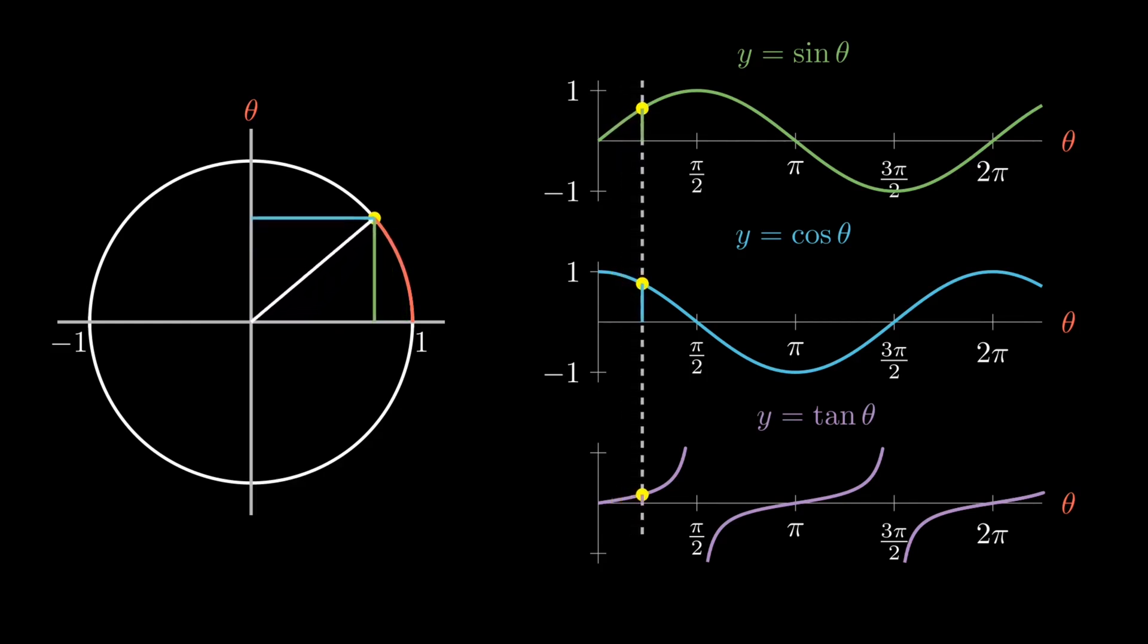At every instant, we also drop the vertical and horizontal projections of the point onto the x and y-axis respectively in green and blue. From what you know about triangles, you can see that these are sin θ and cos θ respectively. And there on the right, those projections are plotted as a function of theta, which in this case is the arc swept by the circle. The green curve traces sine theta, the blue one cos theta.